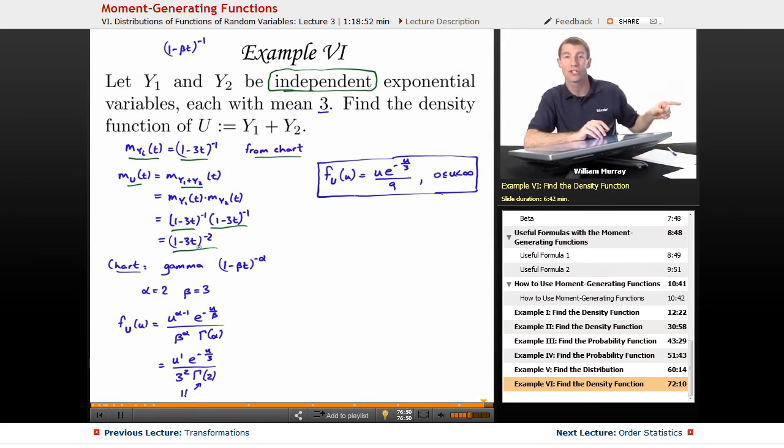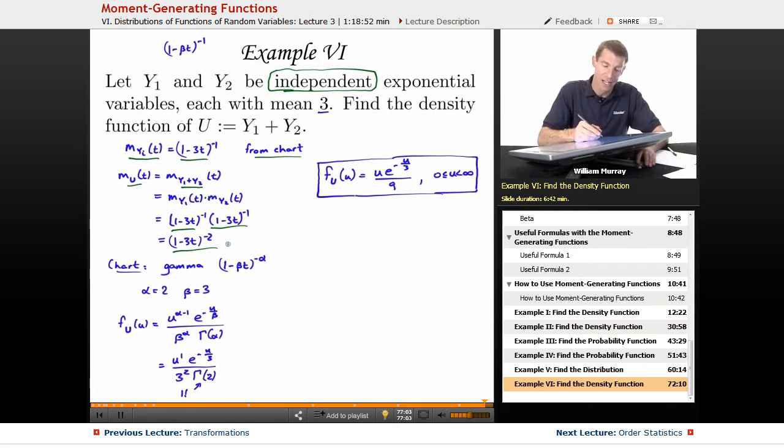Now I go back and look at the chart, and I'm looking at my continuous distributions, and I'm saying, do I recognize this moment generating function? And I say, yes, this is the mgf, the moment generating function for the gamma distribution. Because the moment generating function for the gamma distribution has this form, 1 minus beta t to the negative alpha. So I just recognize that this is the right thing with alpha equals 2 and beta equals 3. So I know I've got a gamma distribution, and I know my formula for a gamma distribution, my density function for a gamma distribution, is just given by this.